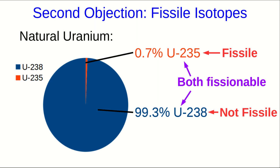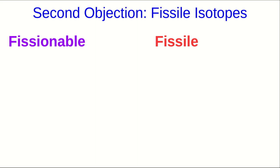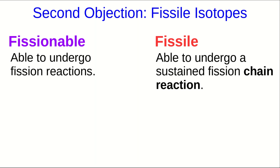And now I'd better explain the difference between fissionable and fissile. So fissionable means able to undergo fission reactions. Both U235 and U238 are fissionable. Fissile means able to undergo a sustained chain reaction.